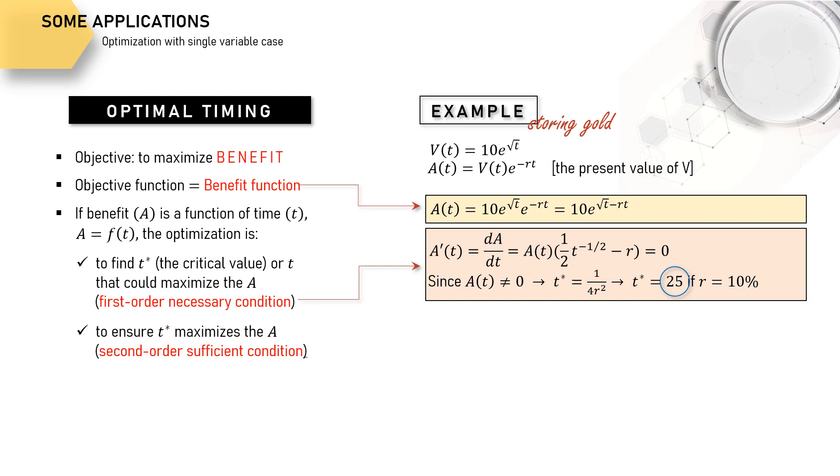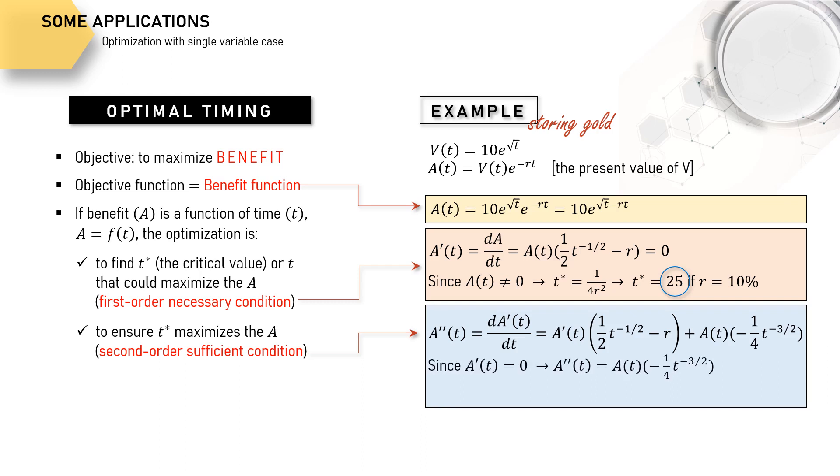Then the last thing that we need to find out is the second order sufficient condition to ensure our T* would really maximize the benefit or the present value of gold. This second derivative here is obtained using the UV formula. Since the first derivative is zero from our previous calculation, then the second derivative is now represented by this equation. We know the sign for each expression here. Therefore, we can prove that the second derivative must be negative.